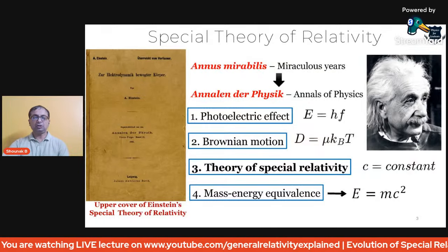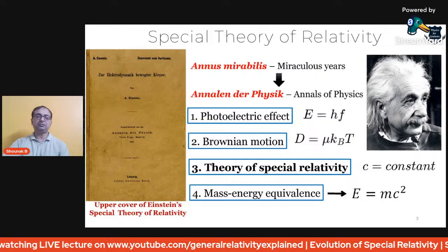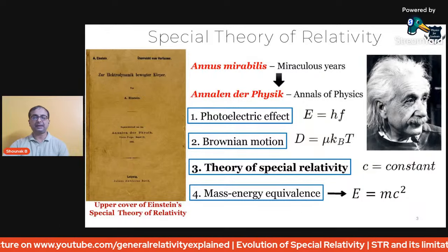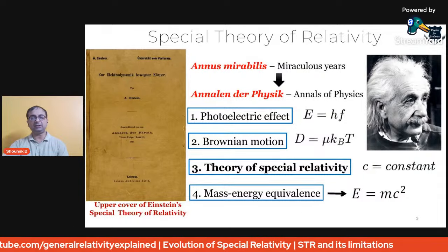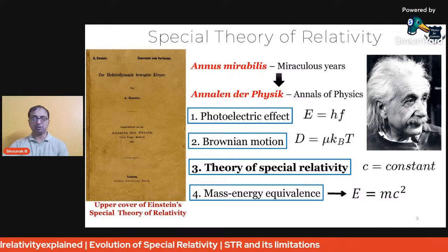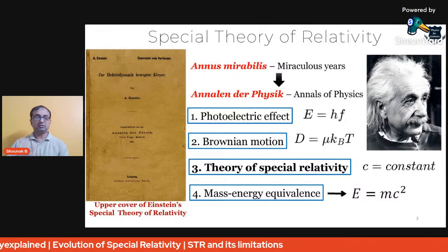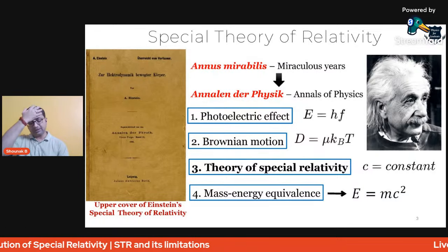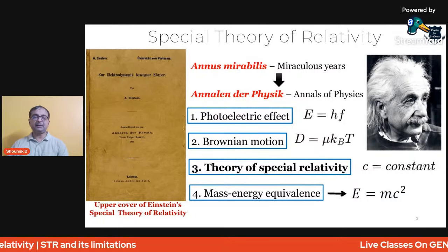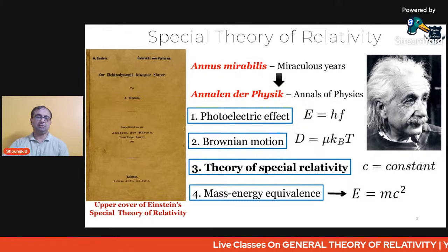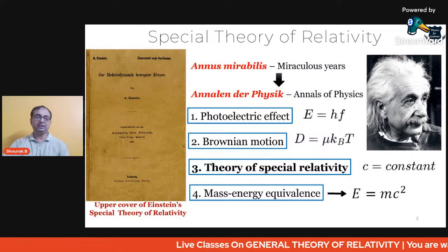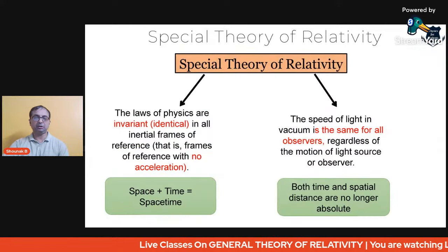These four papers, together with quantum mechanics and Einstein's general relativity, are the foundations of modern physics. Relativity, quantum mechanics, and classical theory together make up the entire foundation of modern physics.